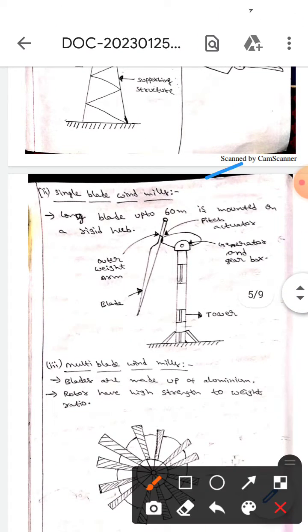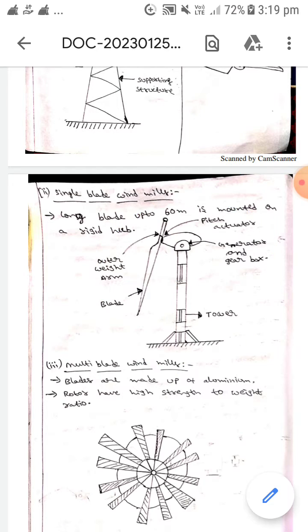The next one is single blade windmills. This single blade is long, up to 60 meters, and is mounted on a right hub. This diagram represents the single blade windmills.